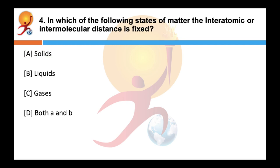In which of the following states of matter is the inter-atomic or inter-molecular distance fixed? Answer is A — solids. The inter-atomic or inter-molecular distance is fixed in the case of solids, but in the case of liquids and gases, it is not fixed.